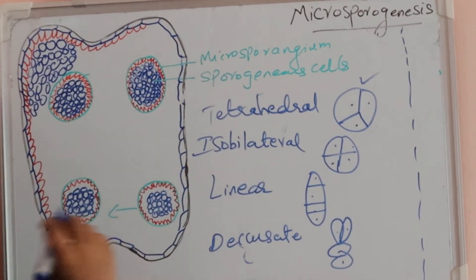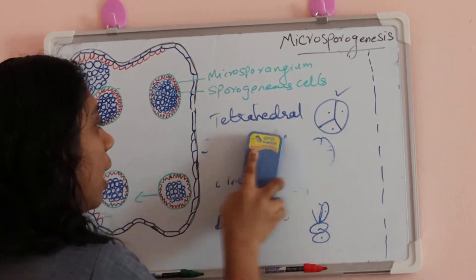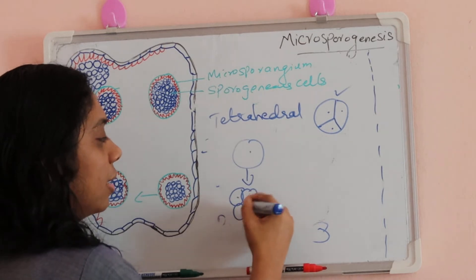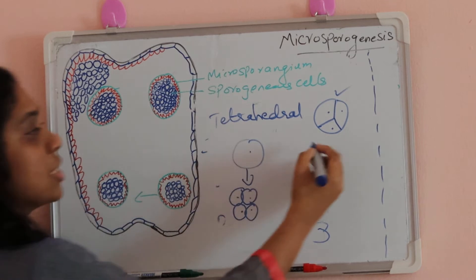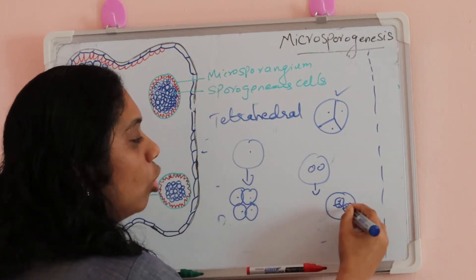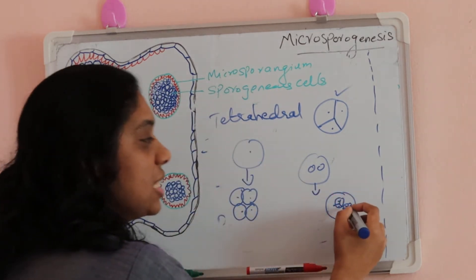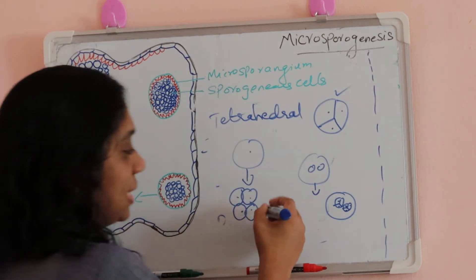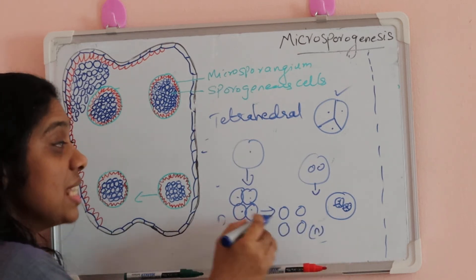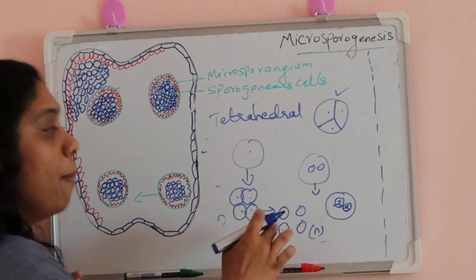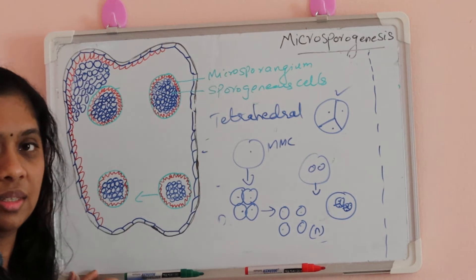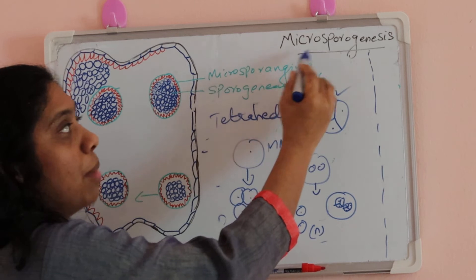After the meiotic division, from the microspore mother cell it forms the tetrad. All four sacs will form the tetrad shape. After this, the tetrad will split to form four haploid cells — these are the microspores. The formation of microspores from the microspore mother cell is called microsporogenesis.